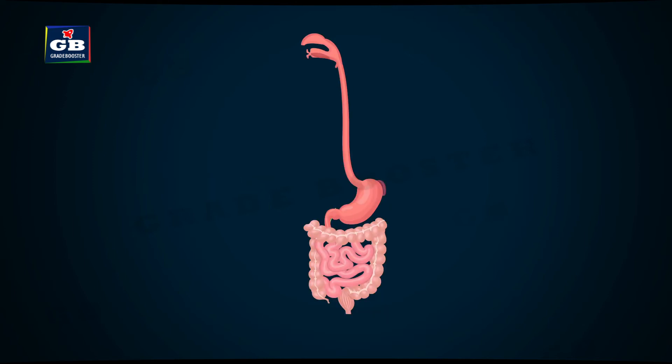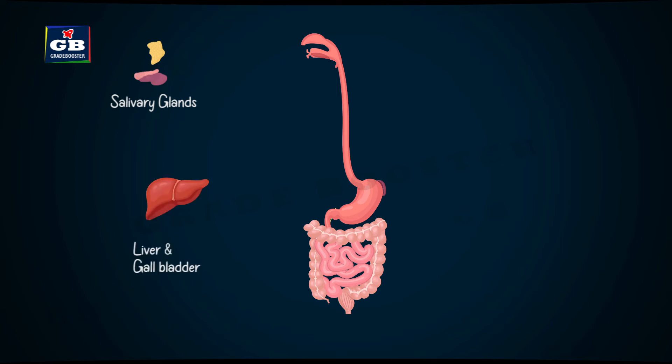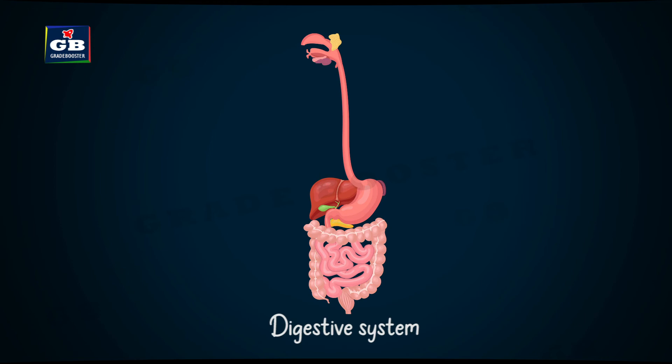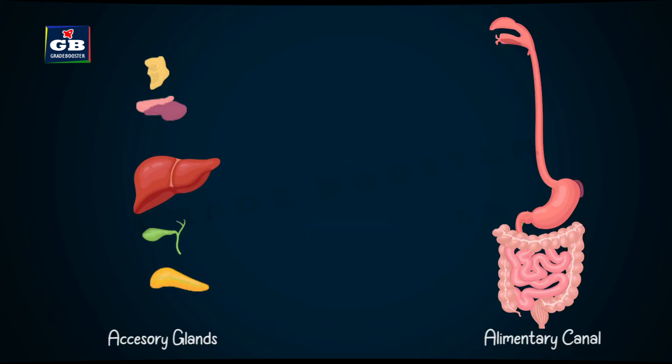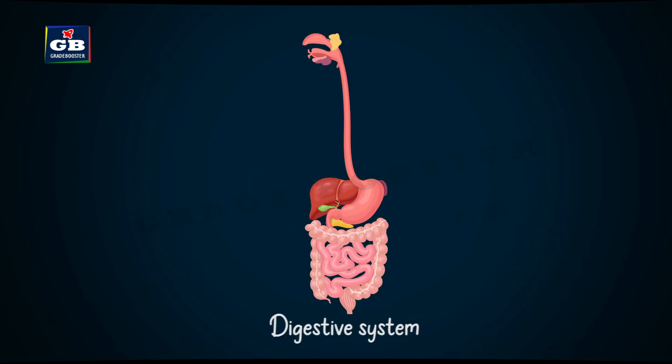Glands like salivary glands, liver, gallbladder, and pancreas are attached to the alimentary canal and form the digestive system. So accessory glands plus alimentary canal together makes the digestive system.